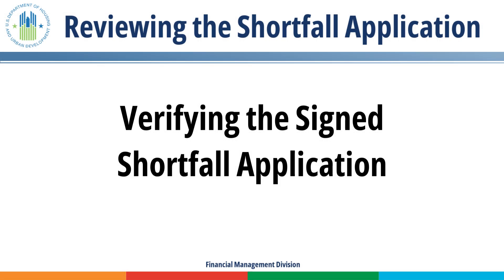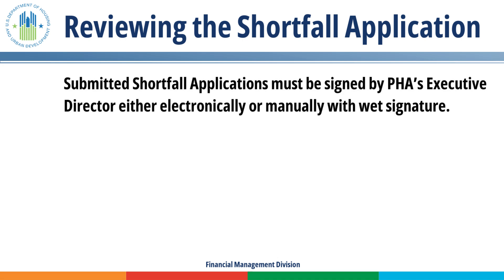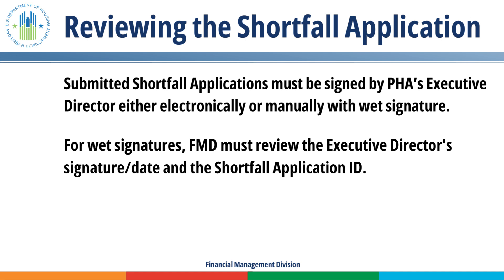Verifying the Signed Shortfall Application. The submitted shortfall application must be signed by the PHA's Executive Director, either electronically or manually with a wet signature. If a PHA submitted an application with a wet signature, FMD must review the form to ensure the PHA attached the file with correct information, the Executive Director's signature and date, and the shortfall application ID. The shortfall application ID in the attached form shall match with the ID in the portal.